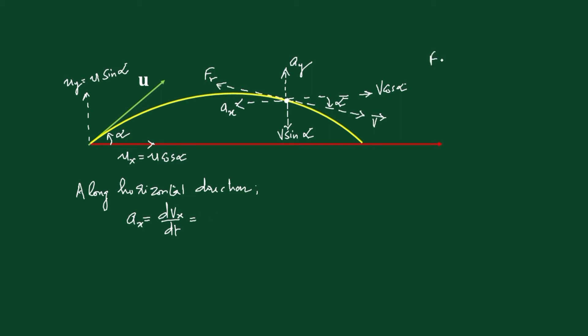To solve the problem, considering horizontal motion: acceleration ax = dvx/dt. Using Newton's second law, f = ma, so a = f/m, where f is the resistive force equal to kv. So acceleration = -kv/m. Since mass is 1 kilogram, acceleration = -kv. Therefore, ax = dvx/dt = -kvx, because along horizontal direction the component of velocity is vx.